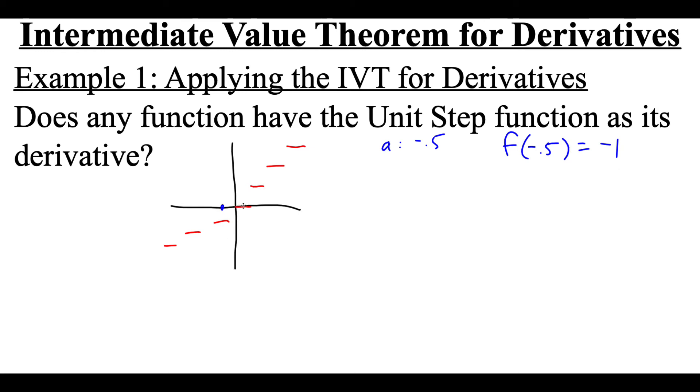But if we pick something a little to the right of 0, say we do positive 1 half, let's call that our b value. If we do f of positive 1 half, that gets rounded down to 0. So we've got function values at negative 1, and we've got function values at 0.